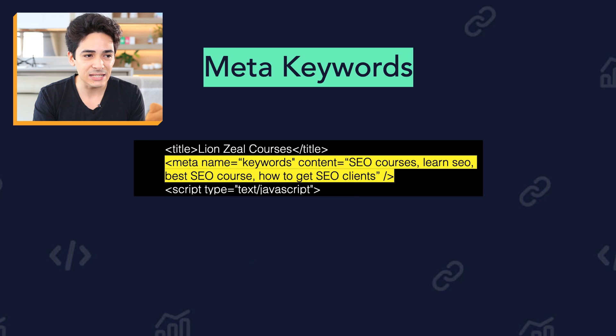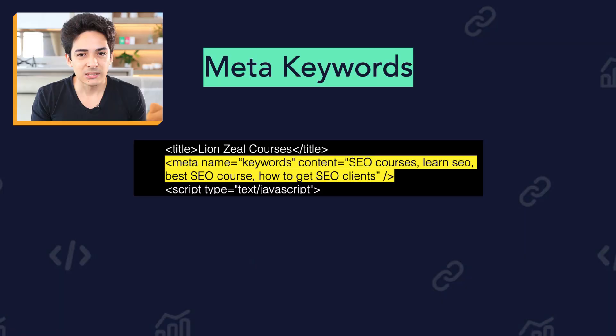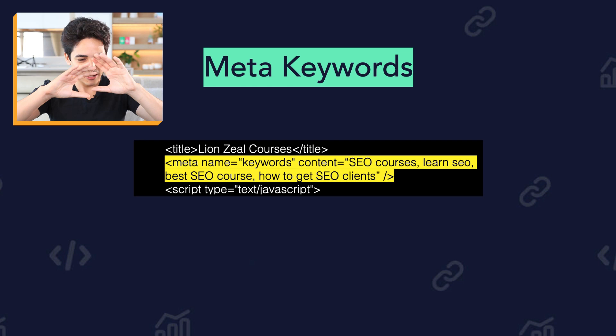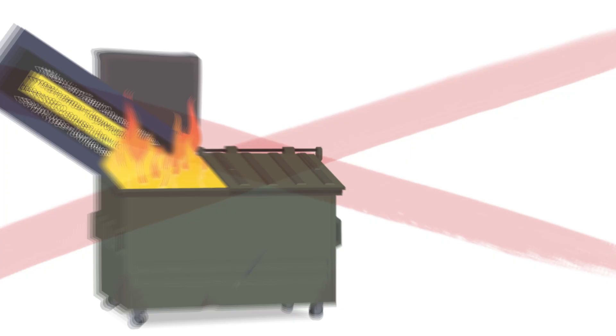One more thing I need to mention: meta keywords attribute. In the early days of SEO, there was a meta keywords attribute where you'd list the keywords you want to rank for. SEOs would include 500 keywords in there. Today, Google does not use this at all. I recommend not including it on the page whatsoever. Don't waste time on it, and don't just hand a list of your keywords to your competitors. Do not use meta keywords.